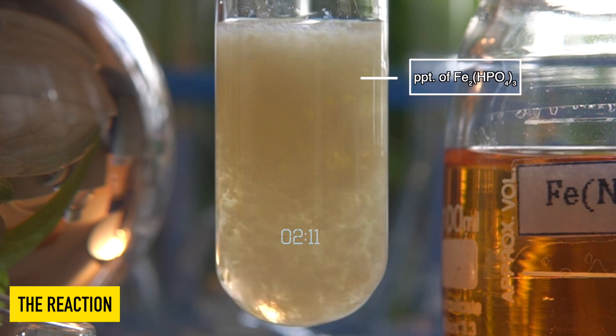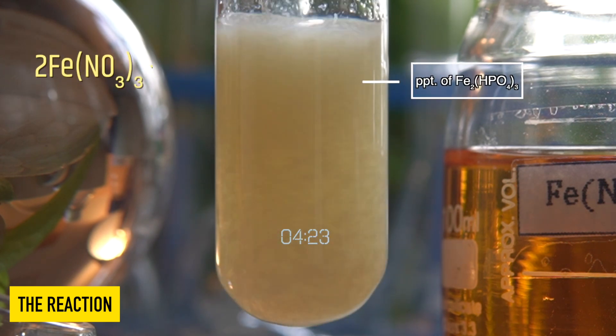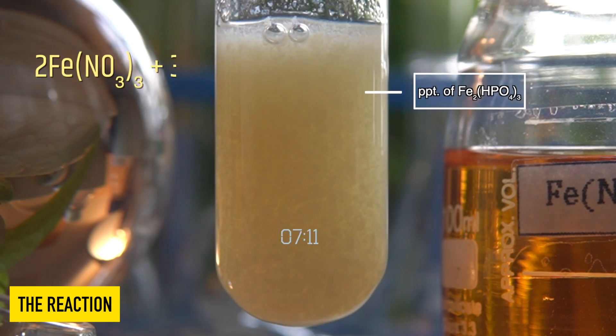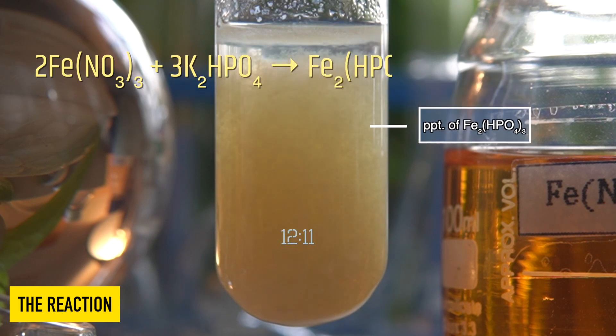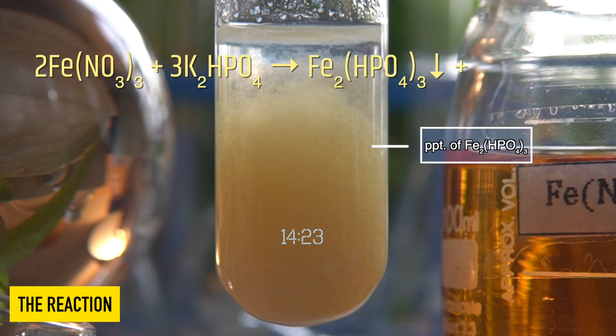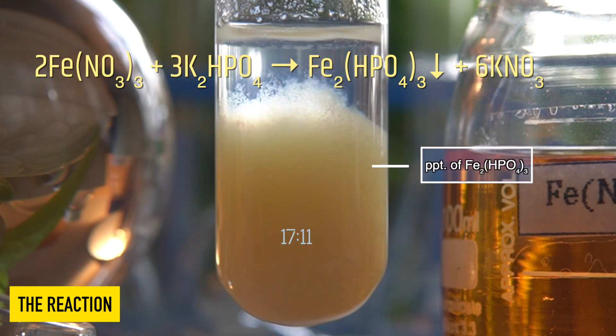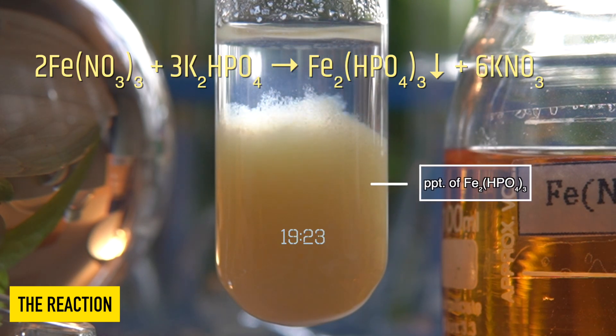In this reaction, iron three nitrate reacts with potassium hydrogen phosphate, producing brown insoluble precipitate of iron three phosphate along with potassium nitrate.